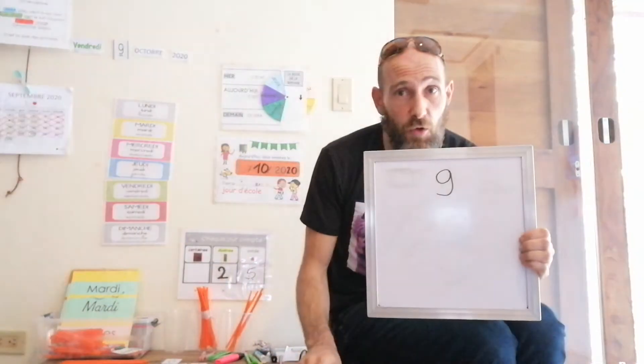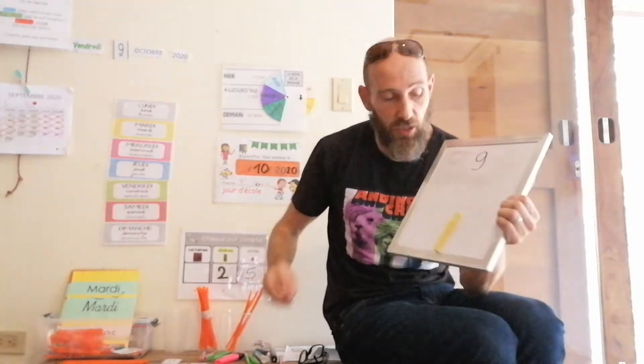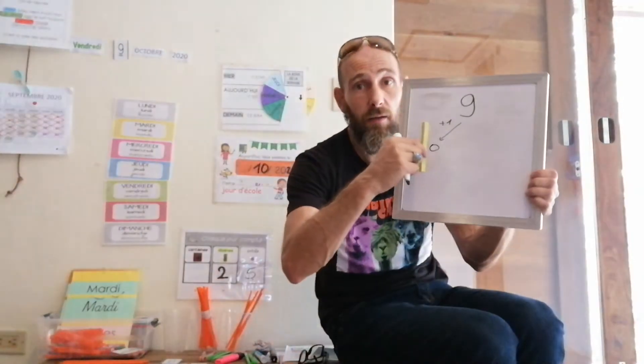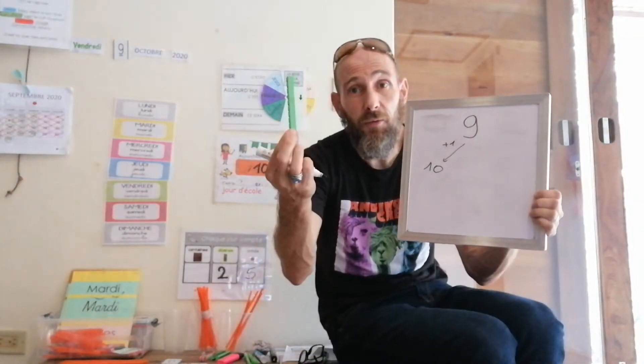Demain, demain, 9. Il y aura un jour de plus. Je vais rajouter donc un petit cube. Après 9 cubes, je mets un petit cube. Il y aura 1, 2, 3, 4, 5, 6, 7, 8, 9, 10 petits cubes. Donc, 9 plus 1 égale 10. Et 10 cubes qui tombent. Alors, quand 10 cubes tombent, que se passe-t-il? Eh bien, je peux les remplacer par 10 cubes.